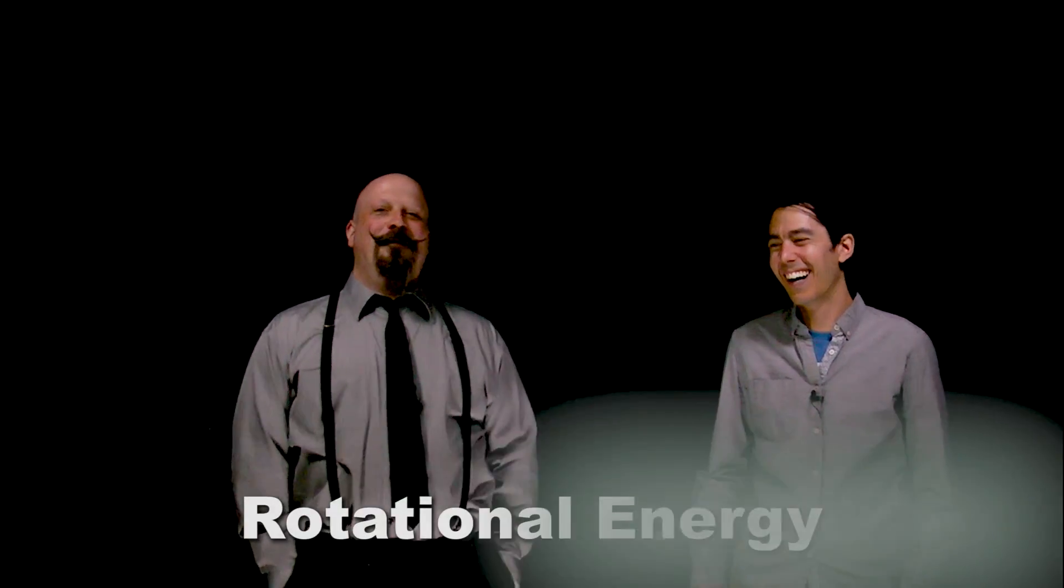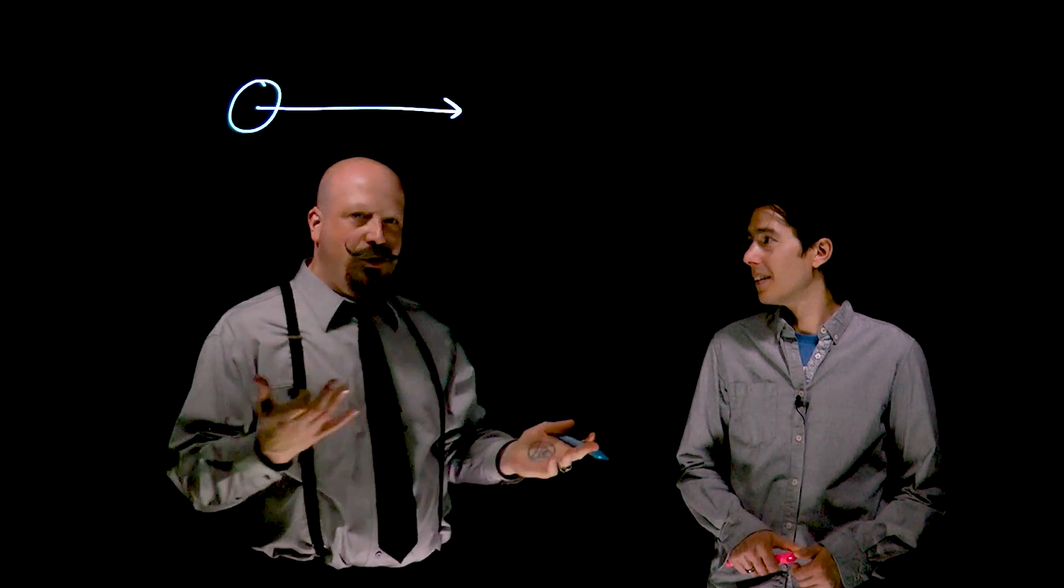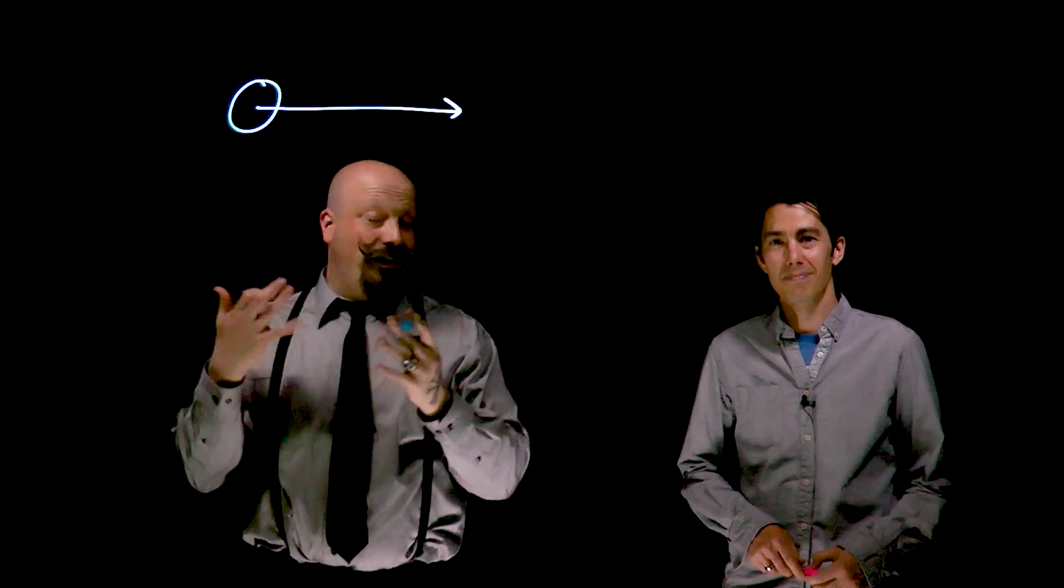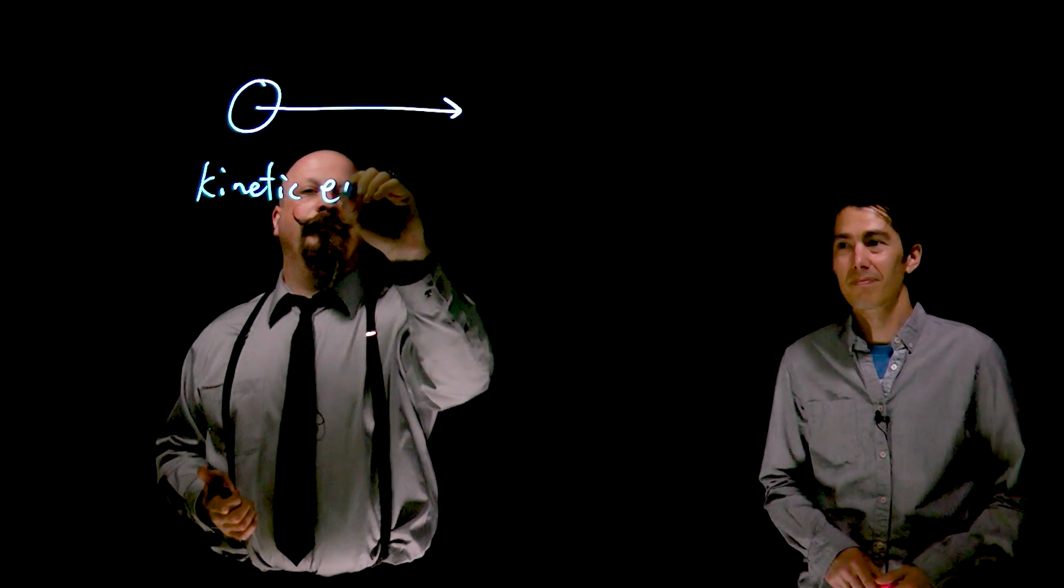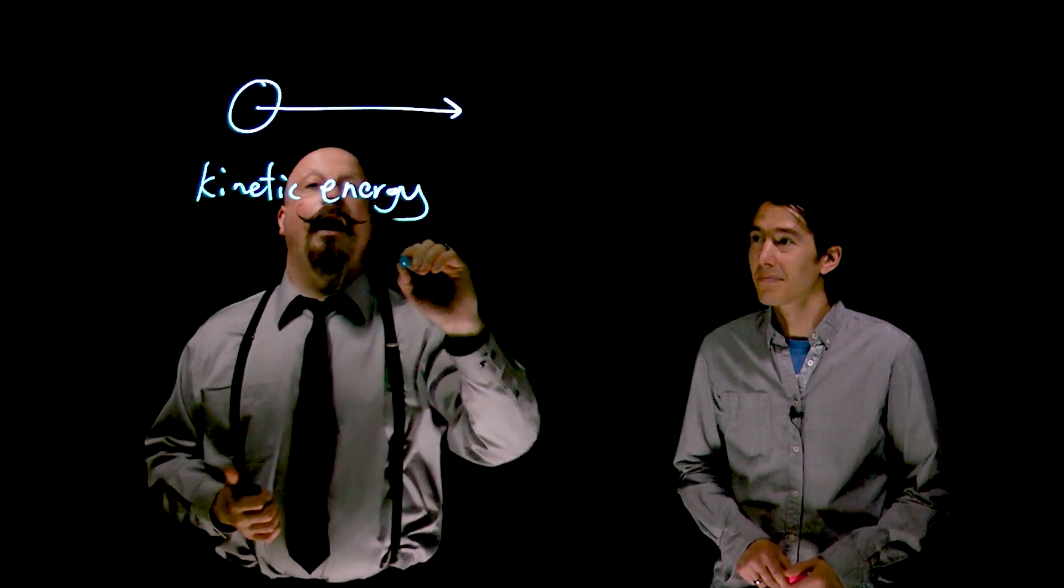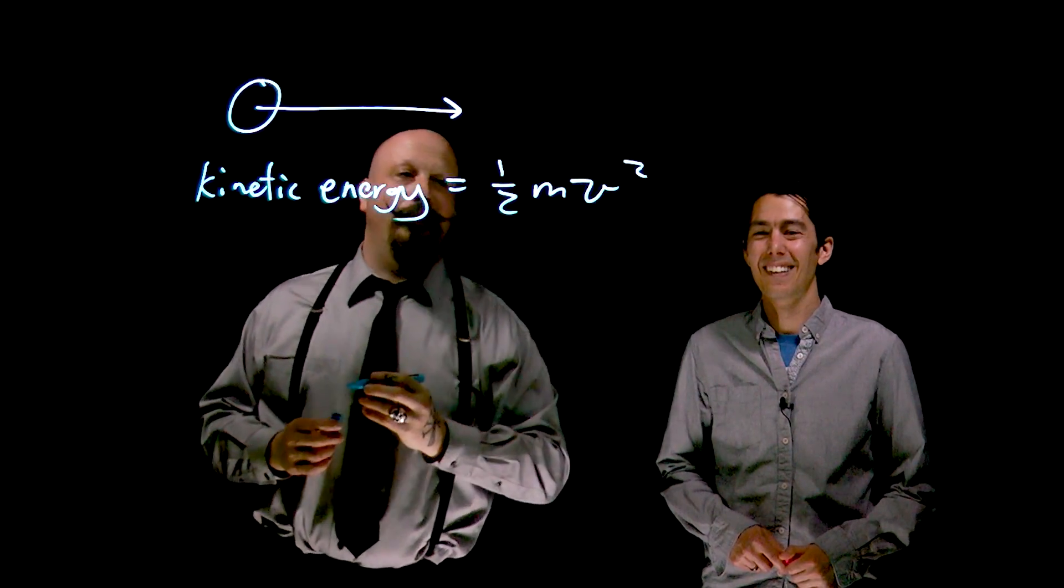Energy! We've looked quite extensively at the idea of an object moving. If an object moves, there's some speed associated with it, some velocity, and we have a kinetic energy. We define that kinetic energy of an object to be equal to one-half the mass times the velocity squared.